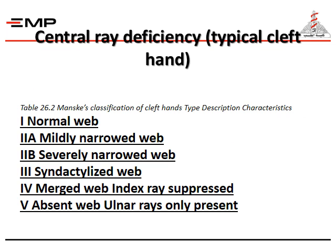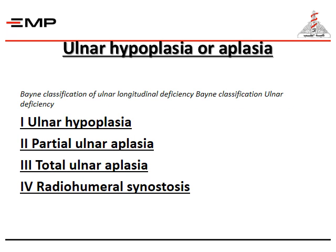Central deficiency presents as a typical cleft hand. Manske's classification of cleft hand includes: type one, normal web; type two-a, mildly narrowed web; type two-b, severely narrowed web; type three, syndactylized web; type four, merged web with index trace suppressed; and type five, absent web with ulnar ray only present. Ulnar hypoplasia or aplasia is classified into four stages: ulnar hypoplasia, partial ulnar hypoplasia, total ulnar hypoplasia, and radiohumeral synostosis.